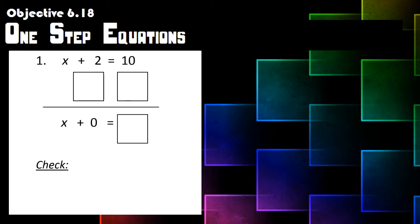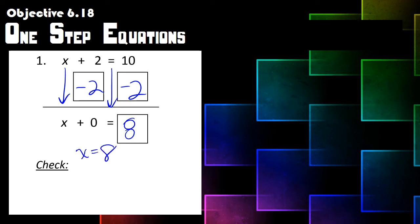Let's try X plus two equals ten. The opposite of addition is subtraction, so we take away two from both sides. X is brought down, the equal sign is brought down, and ten minus two gives us eight. So X equals eight. Let's check: replace X with eight — eight plus two equals ten. That checks out!